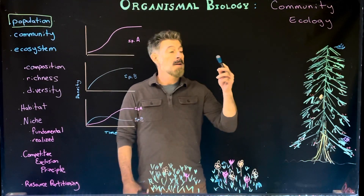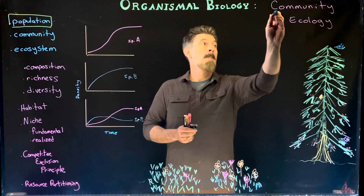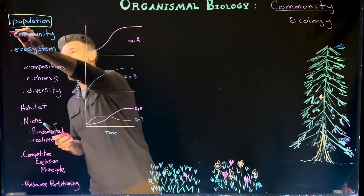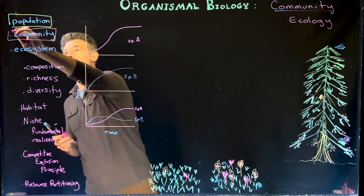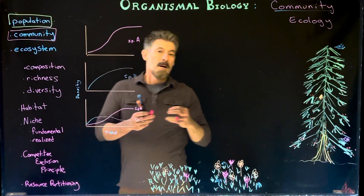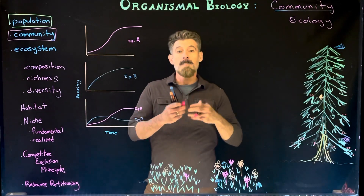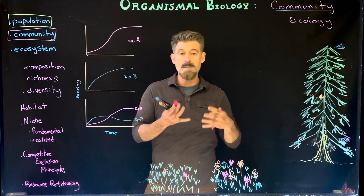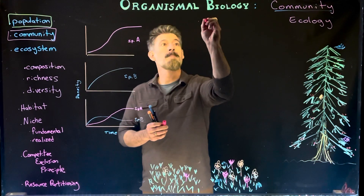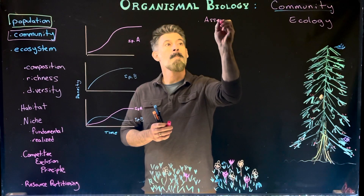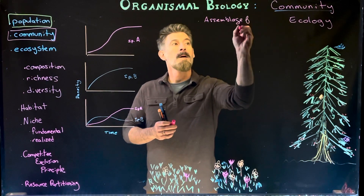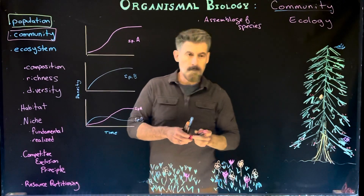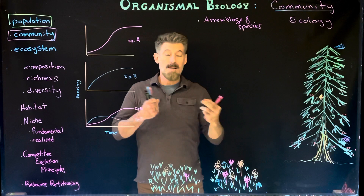Now we're going to look at what we call communities. A community is multiple species of organisms living in the same place at the same time — it's an assemblage of species who live together.